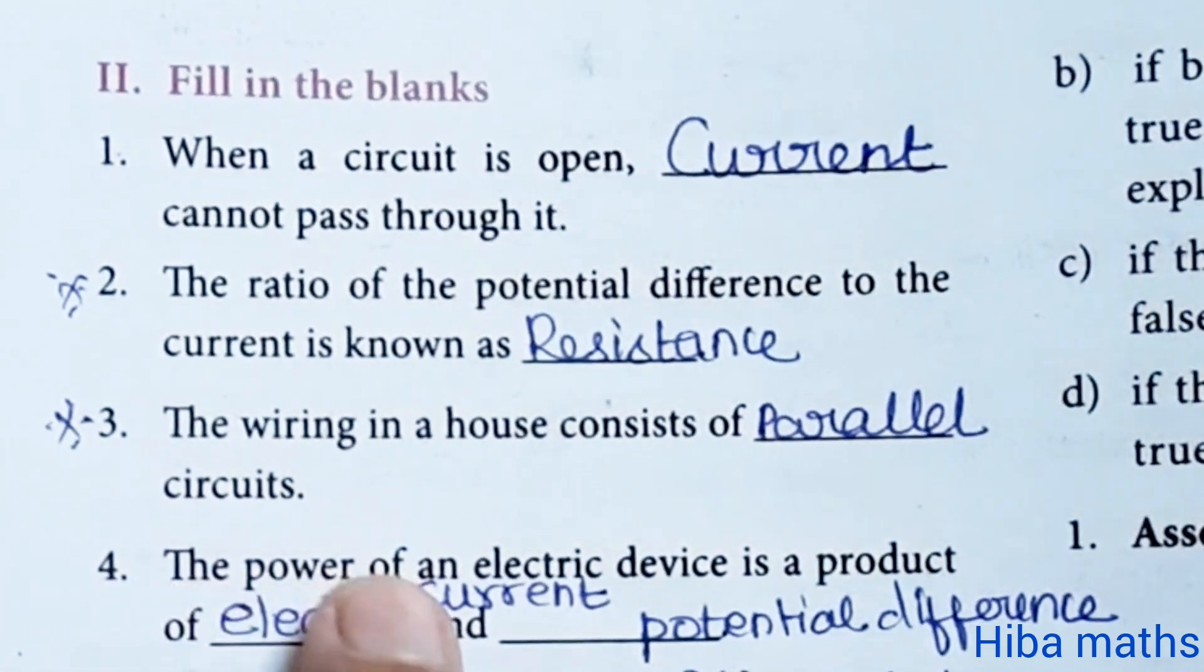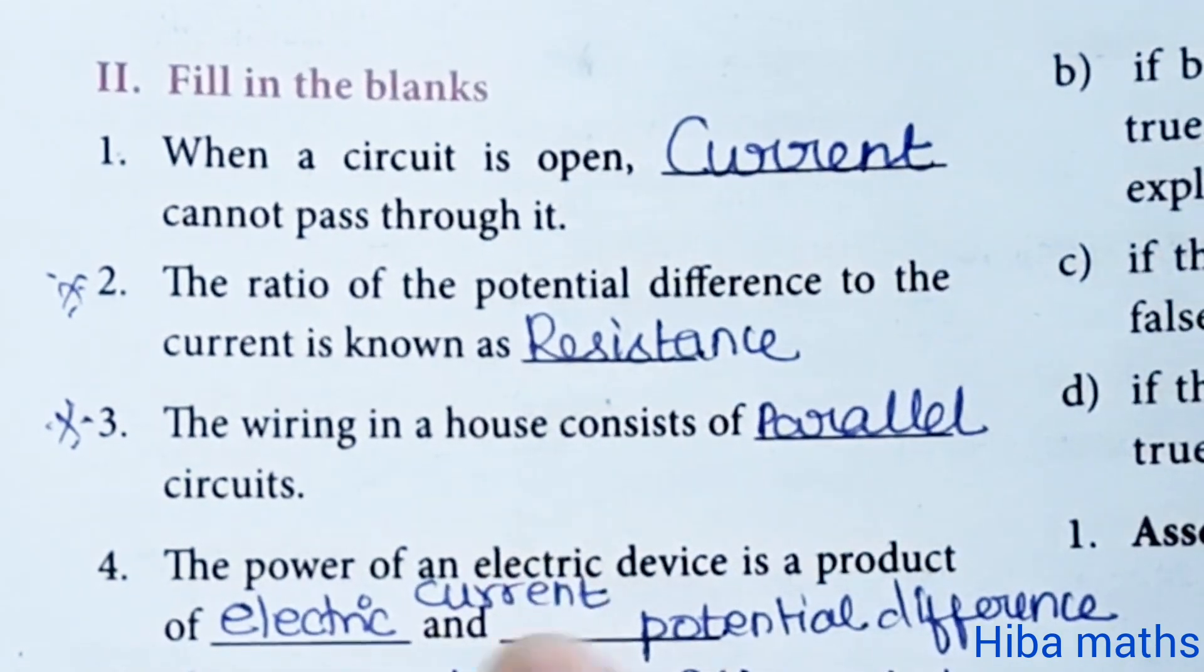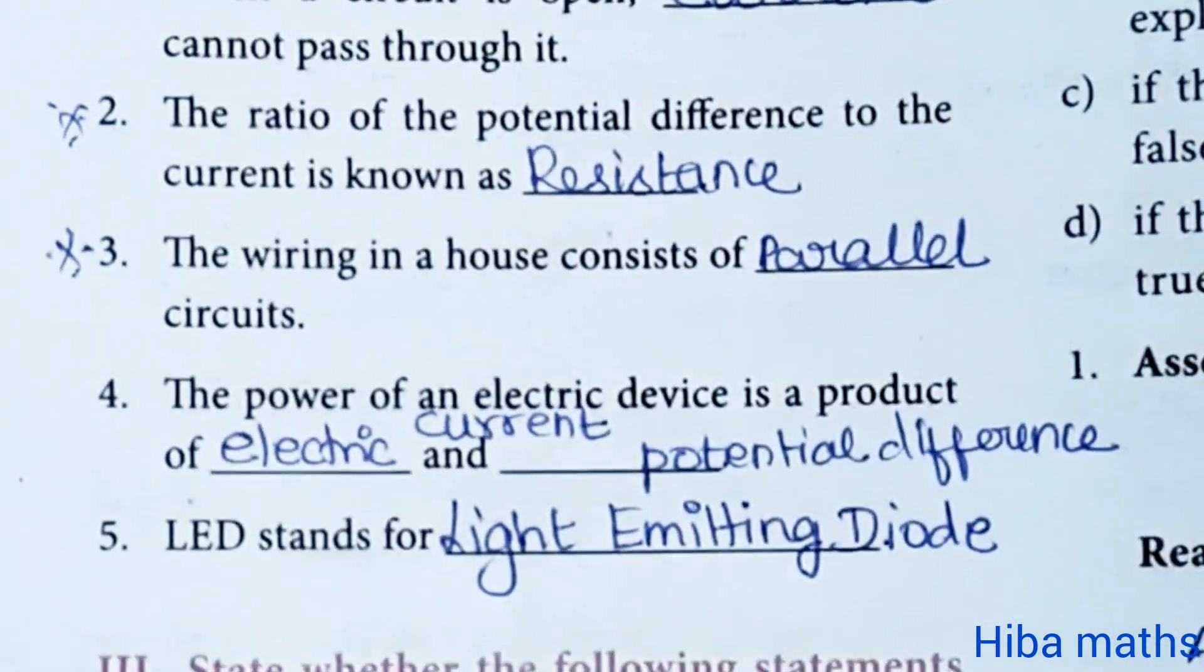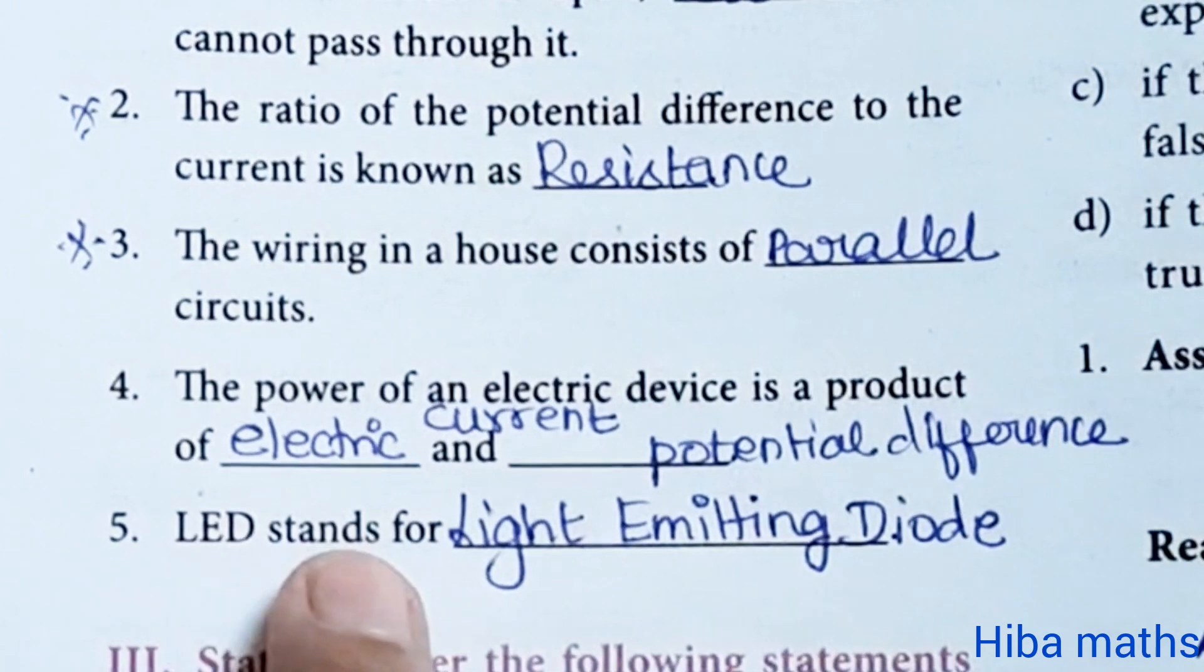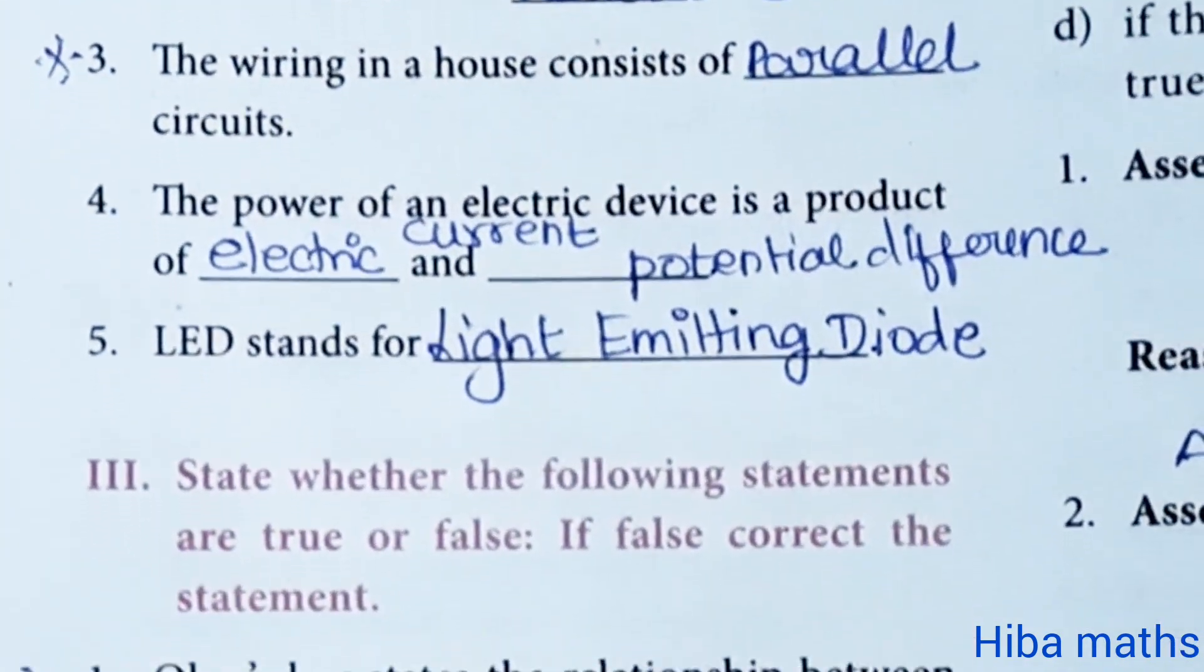Fourth question: the power of an electric device is a product of electric current and potential difference. Fifth question: LED stands for light emitting diode. Spelling is correct? Did you do that?